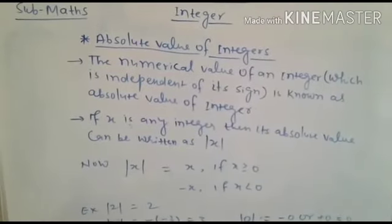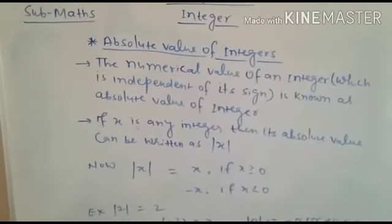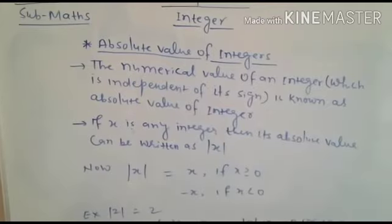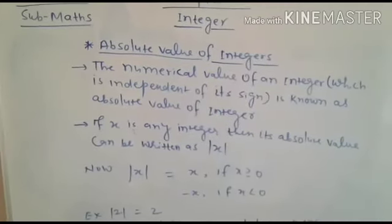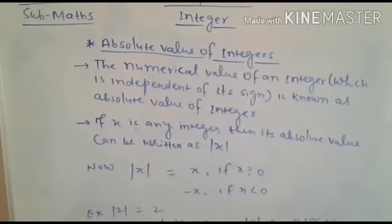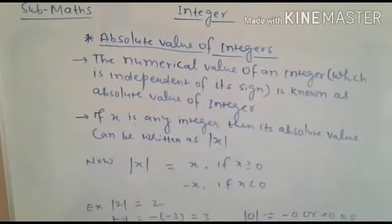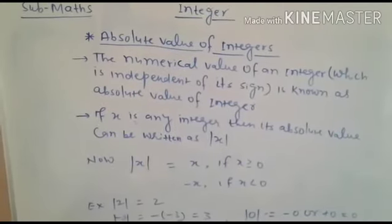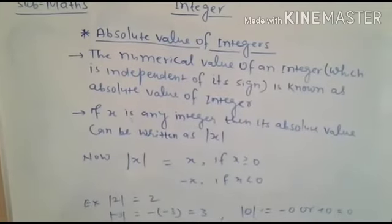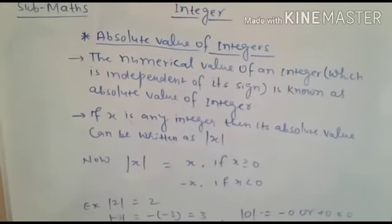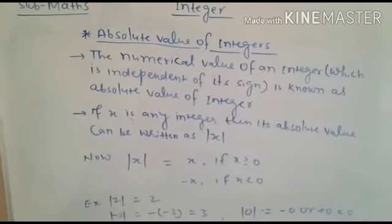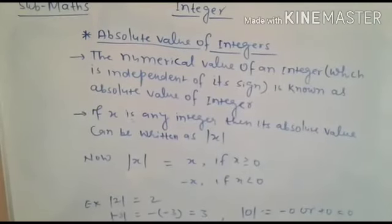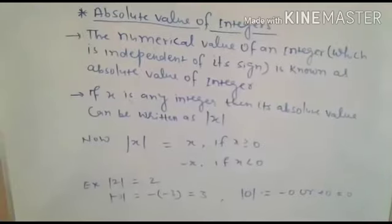So if x is any integer, then |x| equals x if x is greater than or equal to zero, or minus x if x is less than zero. Let us understand this with examples.